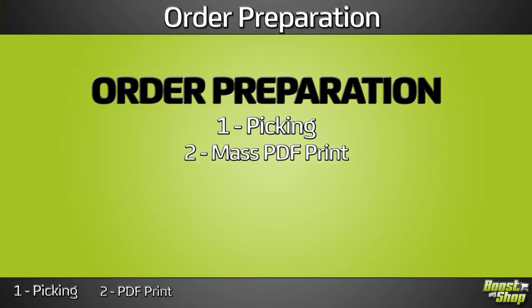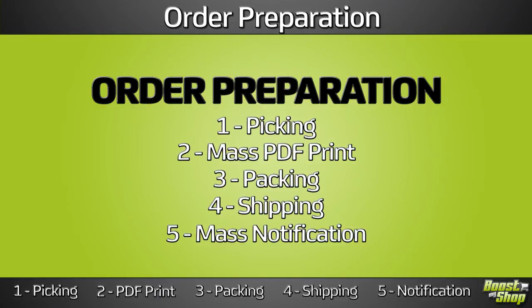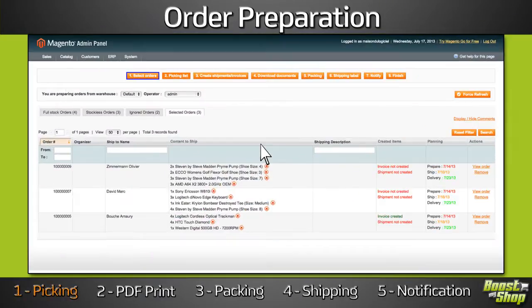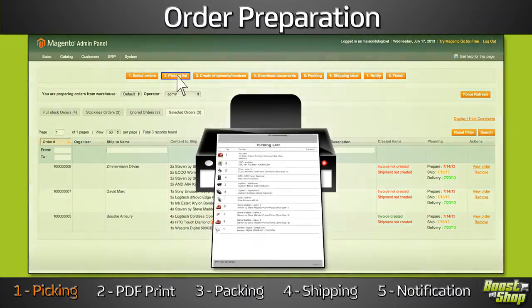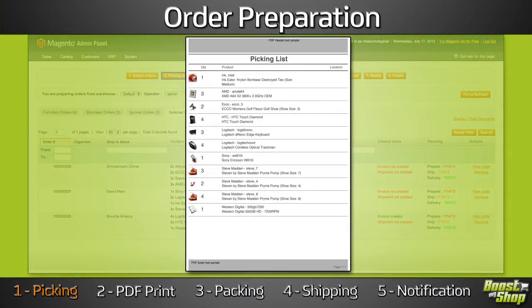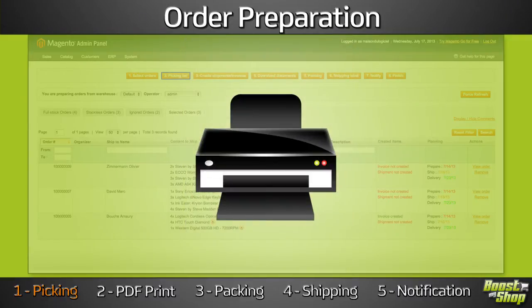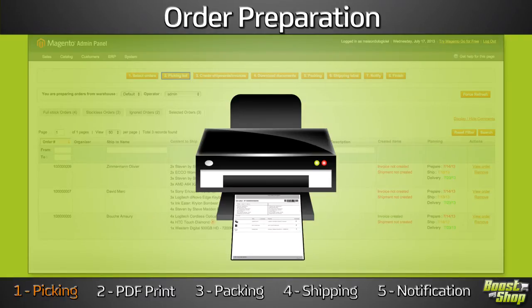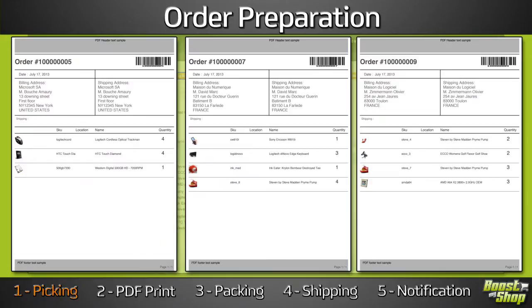ERP implements every professional step for order preparation. Picking. Based on the orders, print a single PDF summarizing every product you need to pick to prepare orders. Product lists can be sorted by location in the warehouse or manufacturer to ensure an efficient picking. ERP can also print one picking document per order summarizing every product.